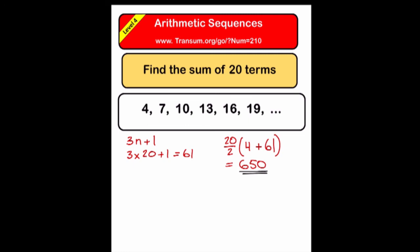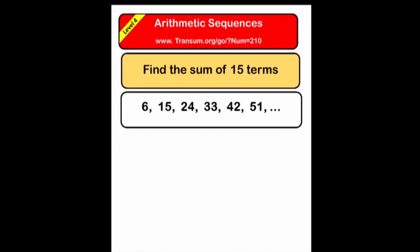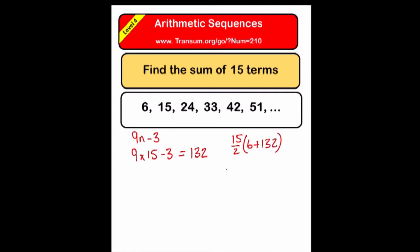Another example: find the sum of 15 terms. First find the formula for the nth term of the sequence, then substitute 15 into that formula to find the 15th term, which is 132. Then apply the Gauss formula: half the number of terms, lots of the first term plus the last term. The answer is 1035.